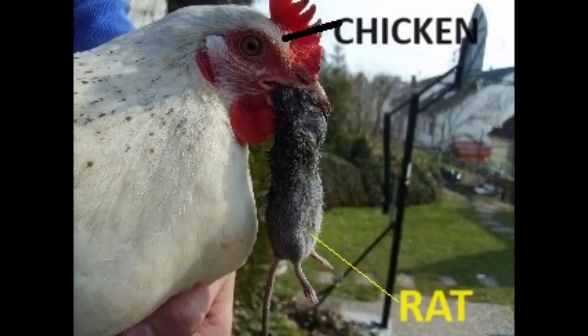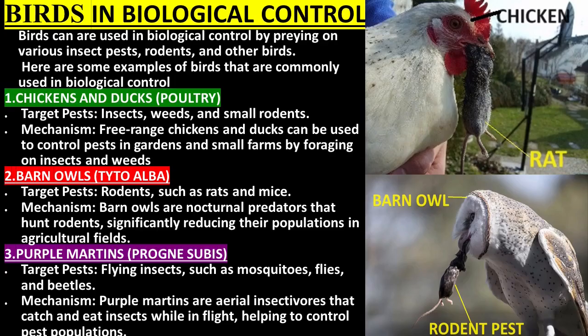Chickens and ducks: target pests include insects, weeds, and small rodents. Free-range chickens and ducks can be used to control pests in gardens and small farms by foraging on insects and weeds.